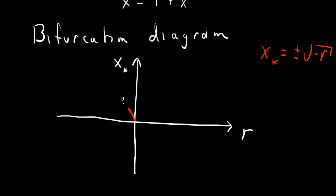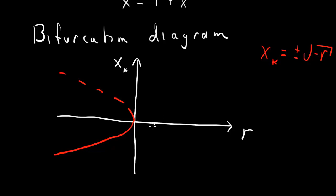Conventionally, the unstable fixed point (the positive branch) is drawn as a dashed line, and the stable fixed point (the negative branch) is drawn as a solid line. This is the bifurcation diagram: when r is negative there are two fixed points, the positive one unstable and the negative one stable. They merge into a single fixed point at r equals 0, and there are no more fixed points when r is greater than 0. This is the typical bifurcation diagram for the saddle-node bifurcation.